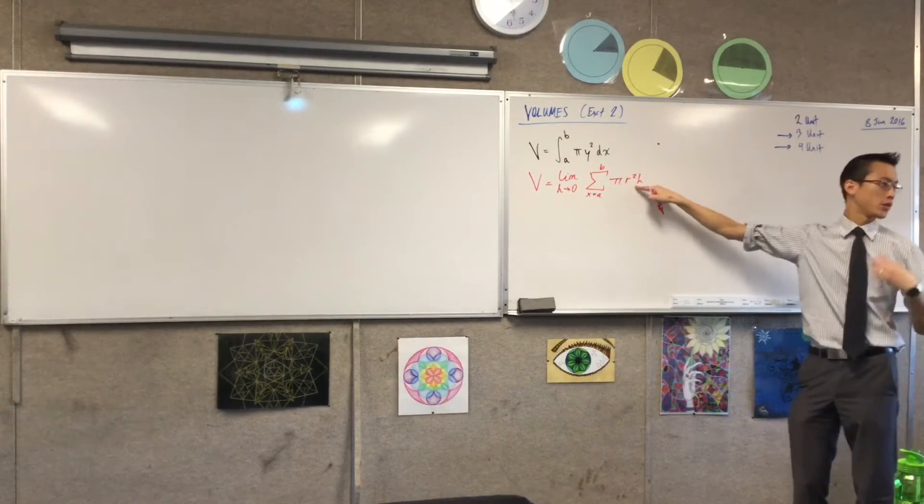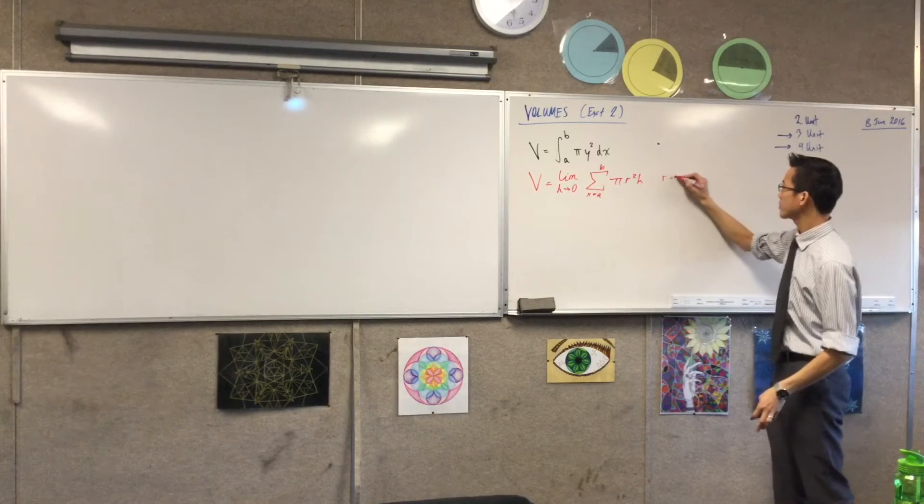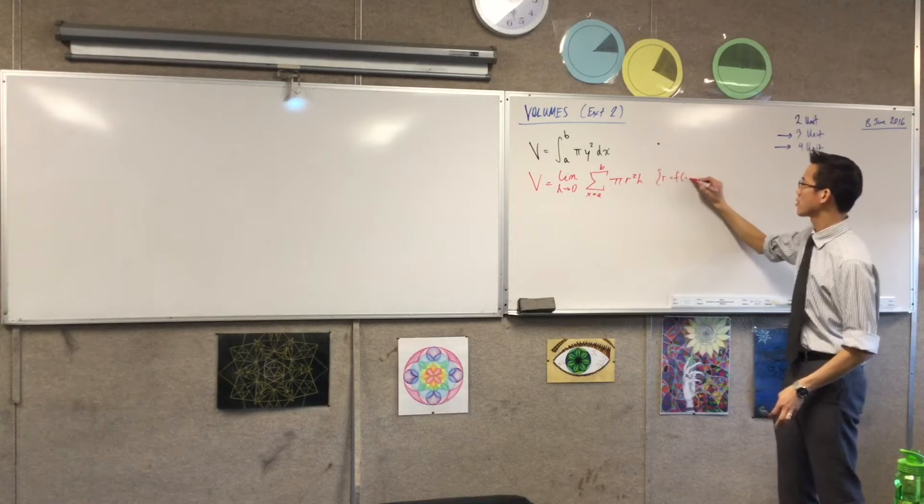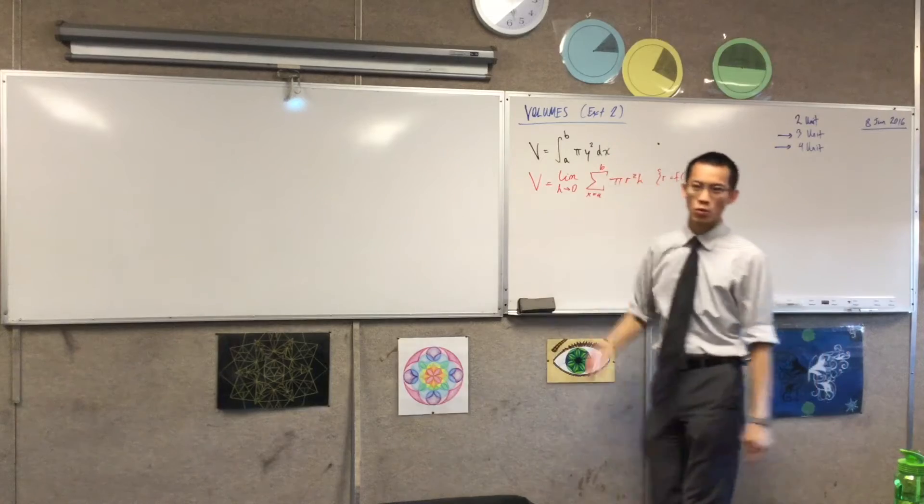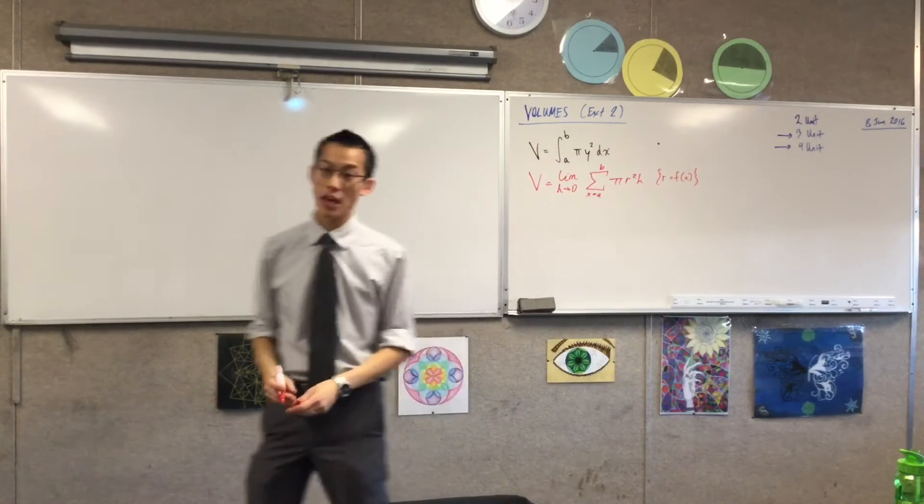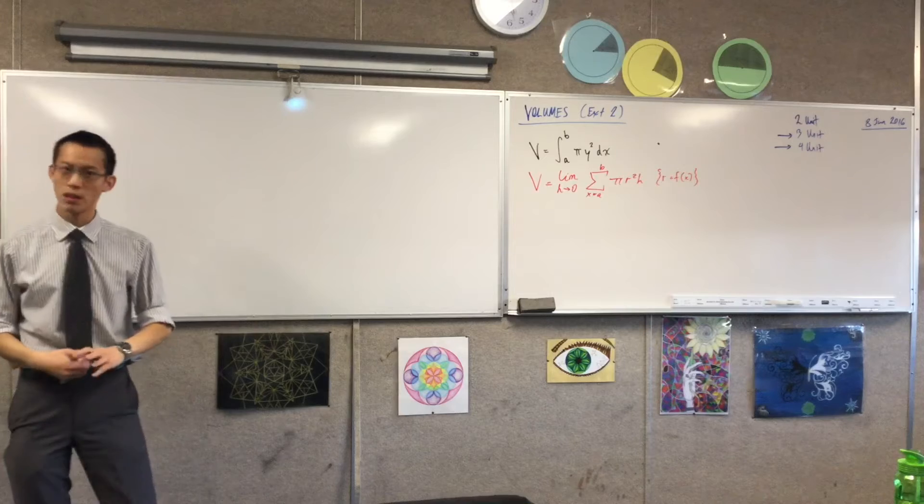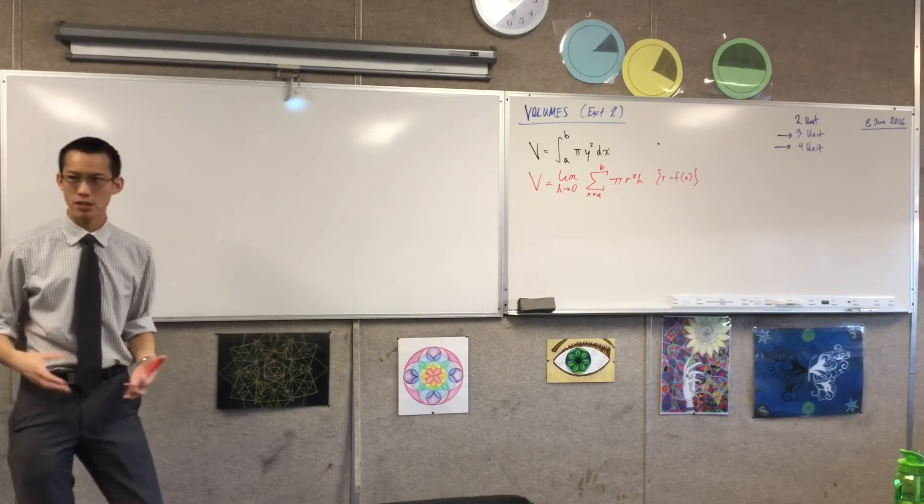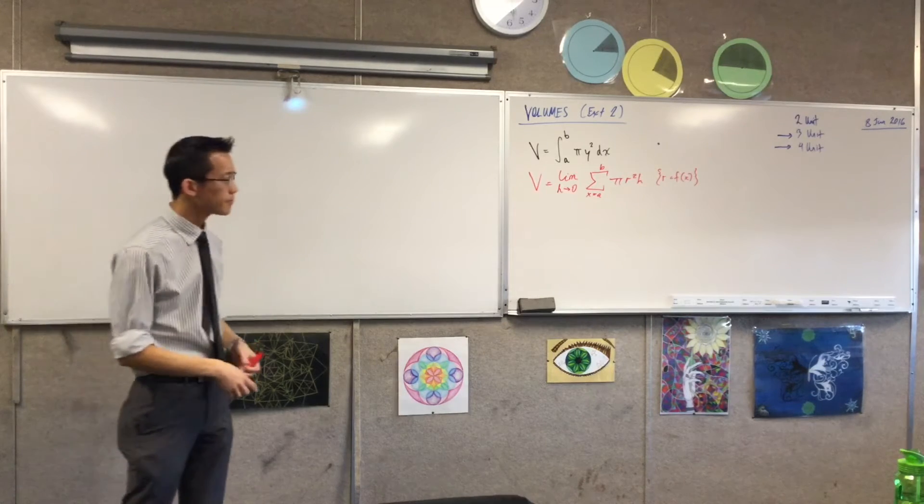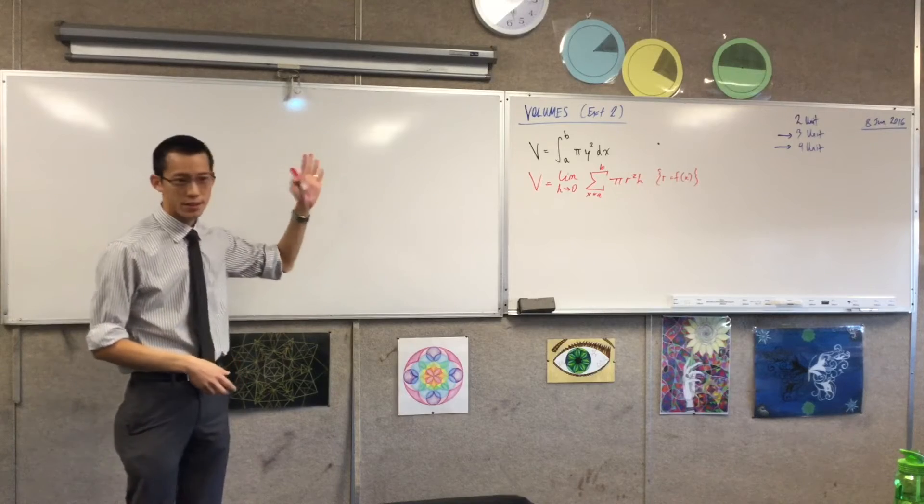But r is what I'm going to be calling the function of x that I used to be calling y. That's just a label. But r is a helpful, it's a more helpful label, I'd argue, because it tells you it's not just a distance. It's the radius of your cylinder. So we know this. This is fine.